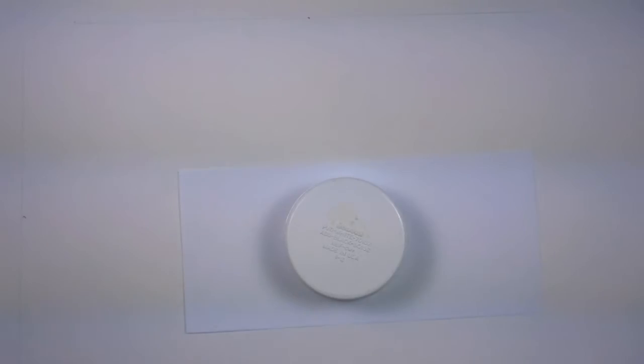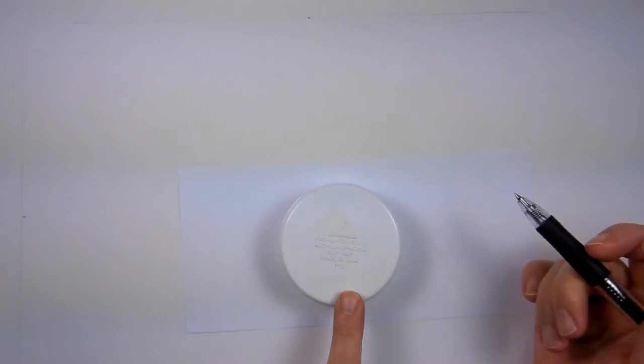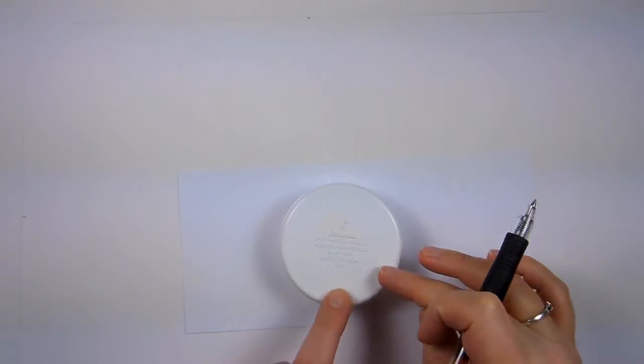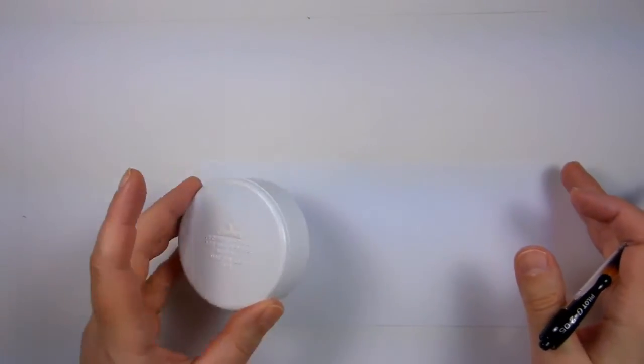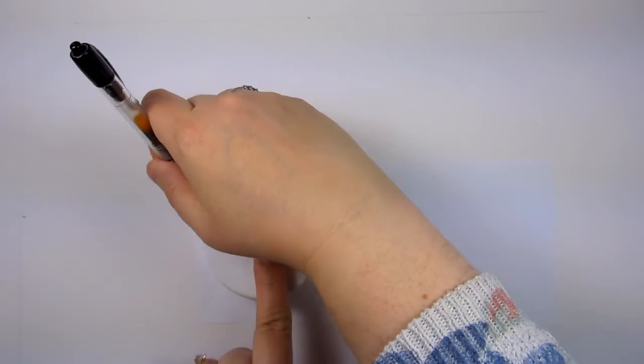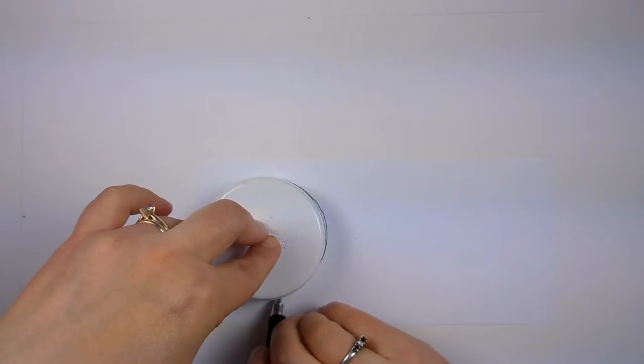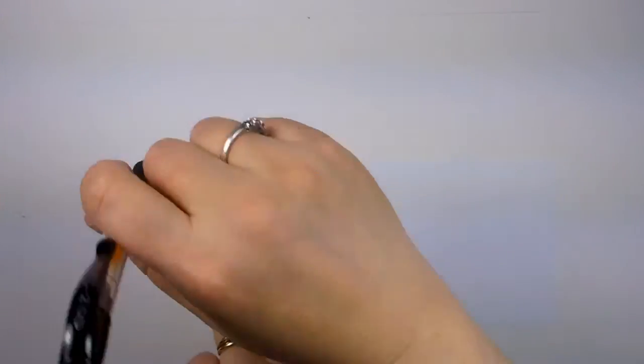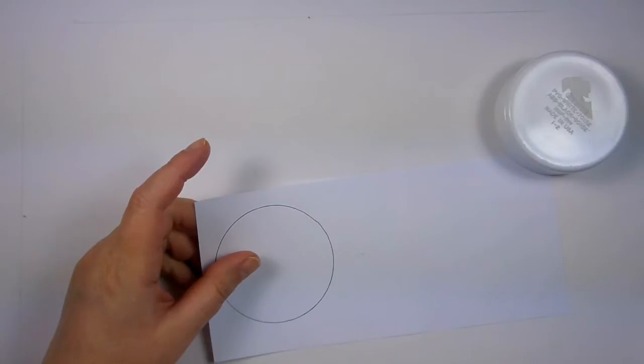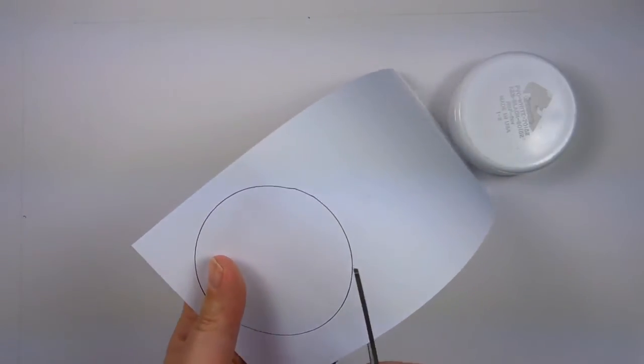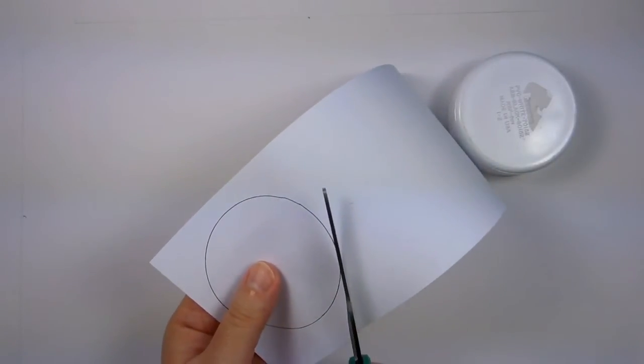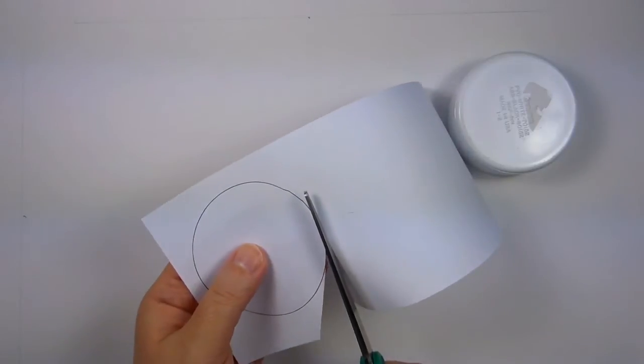The first thing we're going to do to get started is we need to mark this so that we can actually make our 8 cuts around. So basically get a regular old piece of paper, and you're going to draw a circle. And then what you're going to do is you're going to cut that circle out with a pair of scissors. I've got my scissors, and you want to cut it out so it's on the inside of the black line.